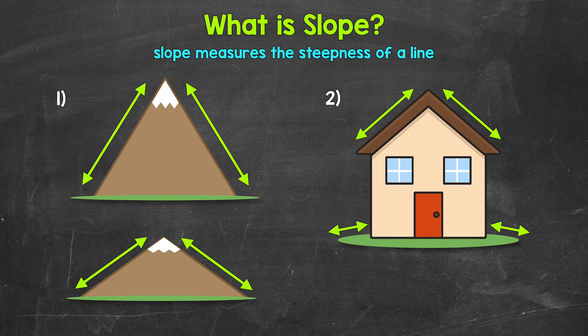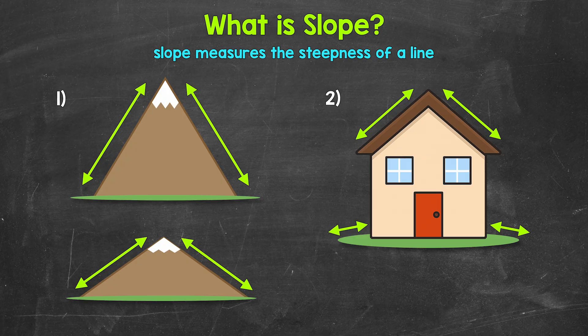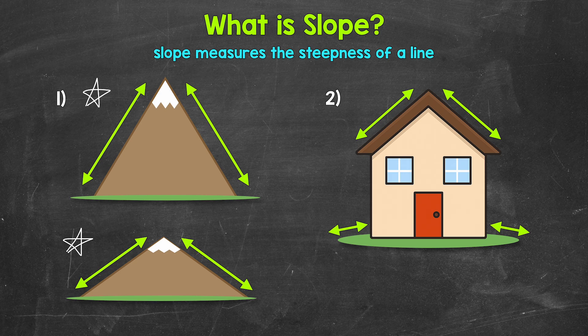Let's jump into number one where we have two mountains. We can see that one mountain is steeper than the other. They have different slopes. This top mountain is steeper than the bottom mountain. Now, I want us to start thinking about vertical change, up and down, and horizontal change, side to side. Basically, how fast are the mountains rising or falling as we look from left to right? The faster the vertical change happens as we move horizontally, the steeper something will be.